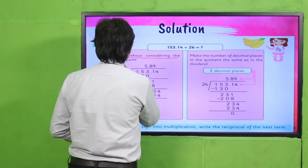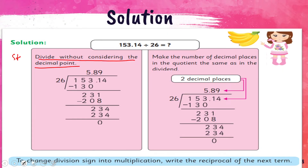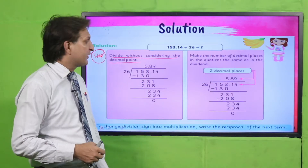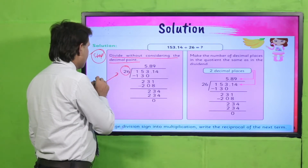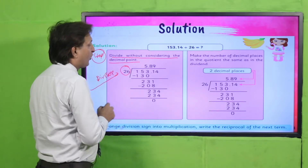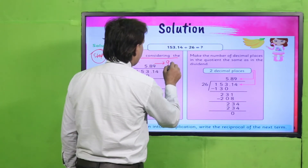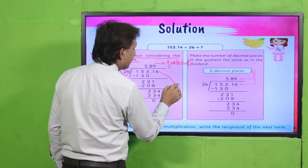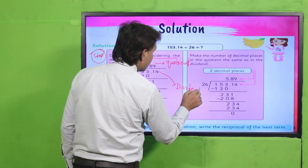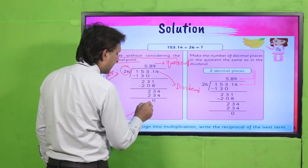First step mein aapne kya karna hai: jo number given hai — 153.14 — isko consider karein ke iske darmiyaan mein koi decimal nahi hai. Aap simply whole numbers ki tarah inko divide karein. Yeh aapke paas dividend hai, yeh divisor hai, yeh quotient hai, aur jo baaki paas jaata hai wo remainder hai.